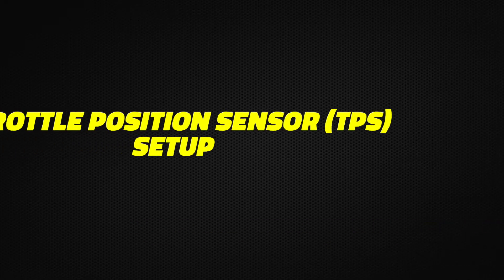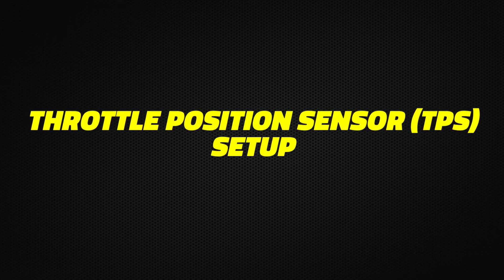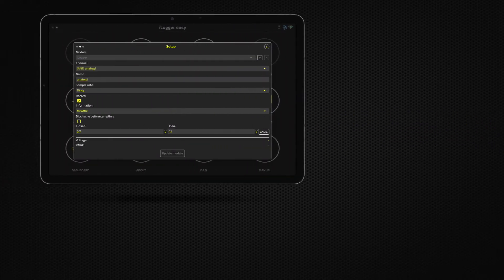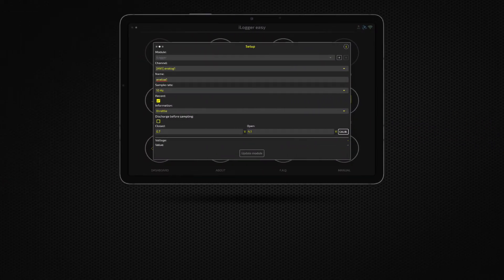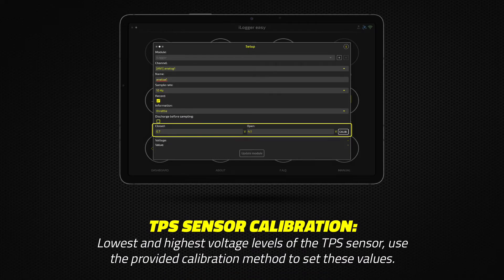TPS sensor setup: In order to calibrate the throttle position sensor, add the lowest and highest voltage levels of the sensor.